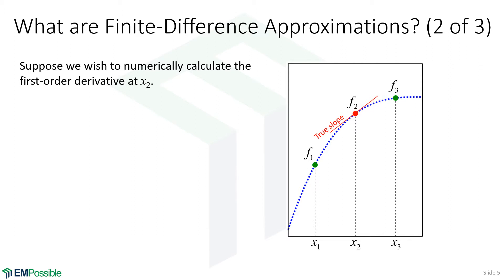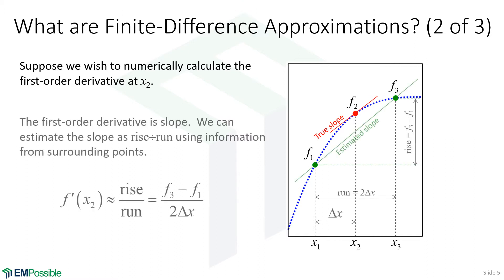One way we could estimate the slope is to connect F2 and F3 with a line. We can estimate the true slope with this approximate slope — the slope of the line connecting F1 to F3. What is slope at X2? It is rise over run. The rise is F3 minus F1, and the run is 2 delta X, because we're going from F1 through F2 up to F3. So: rise = F3 minus F1, run = 2 delta X. This is a finite difference approximation for estimating the first-order derivative at point X2.